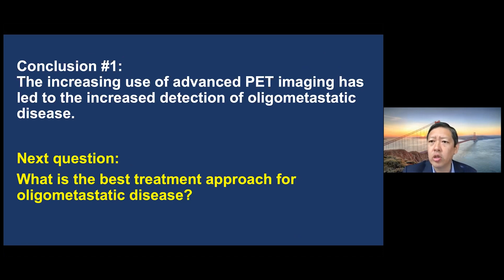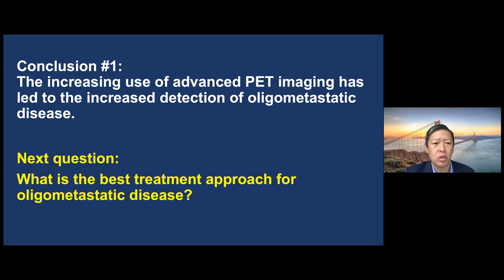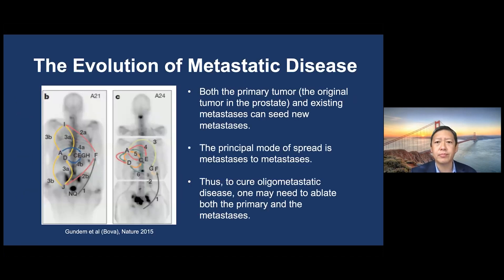The first conclusion we can draw is that the increasing use of advanced PET imaging has led to increased detection of oligometastatic disease. This brings us to our next question: what is the best treatment approach for oligometastatic disease?